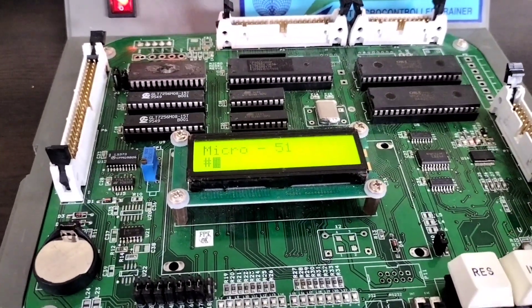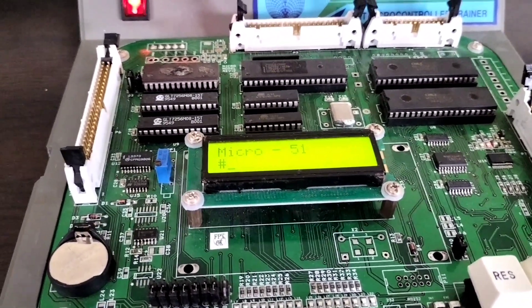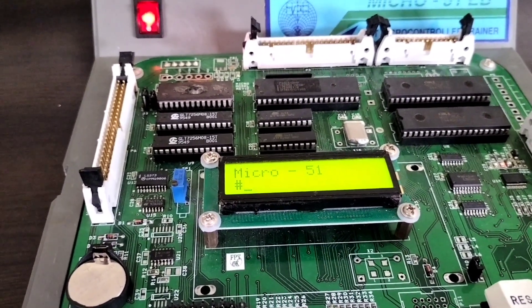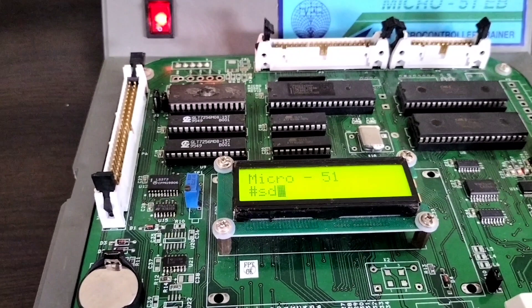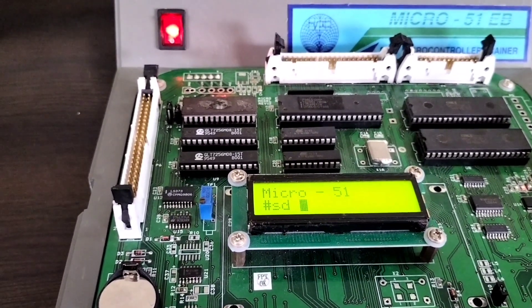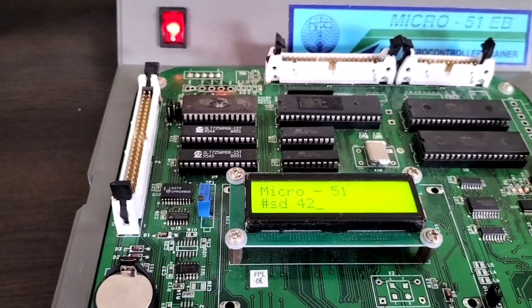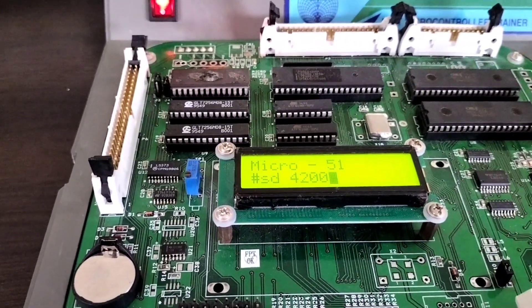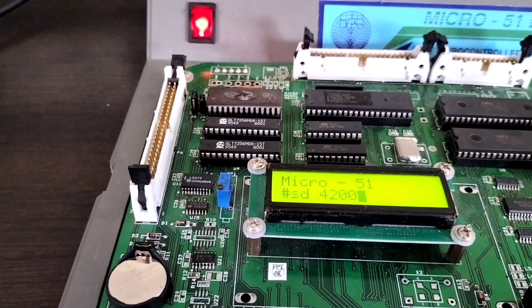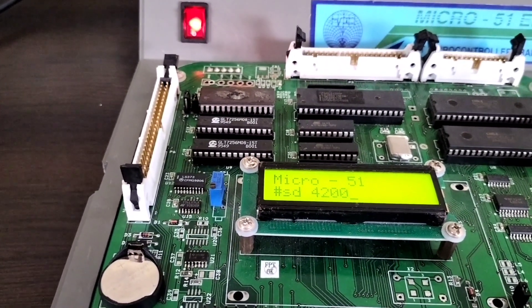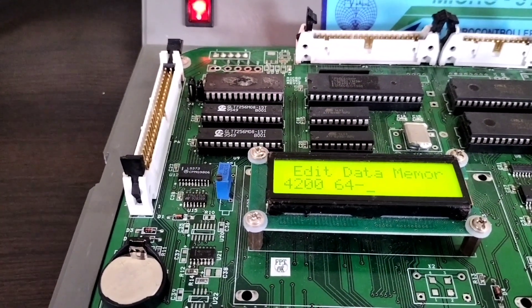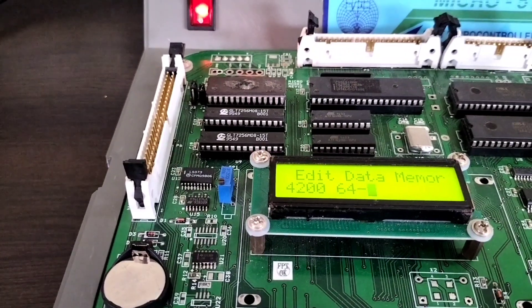So now again press reset. Now we have to see the output. At which location we have to see? It is 4200. So we need to give SD. SD is substitute data. So using that we can see the output. So 4200. So using SD we can either give the input also or we can see the output also. So 43 plus 21 we should get 64 at location 4200. Yes. So we are getting the added value.